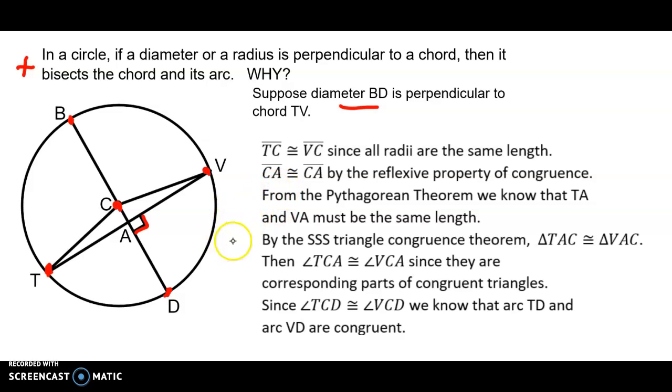We know that TC is congruent to VC because they're both radii of the circle with its center at point C. We know that CA is congruent to itself by the reflexive property of congruence.